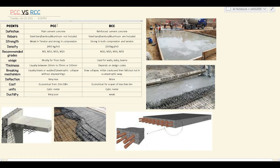The next point is rebars. Within the composition of PCC, steel bars, bamboo, or aluminum are not included. In the case of RCC, steel bars, bamboo, or aluminum are included. Within a mixture, concrete provides the compression property, and these three — steel bars, bamboo, or aluminum — are the tension side of the mixture. So concrete is the compression side, and steel bars, bamboo, or aluminum are the tension side.